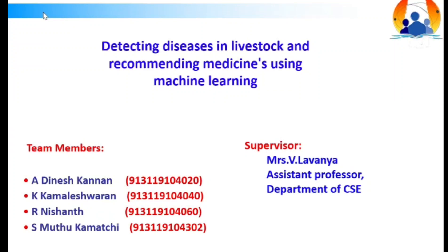Our project title is 'Detecting Disease in Livestock and Recommending Medicines Using Machine Learning.' Livestock is a critical socioeconomic asset in developing countries like India. However, the lack of a reliable and timely diagnosis system for identifying livestock diseases has led to significant losses, hindering food security and poverty reduction. According to the latest available survey, there is only one veterinary doctor for every 5,000 cattle.